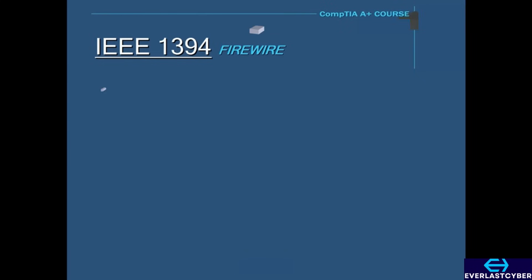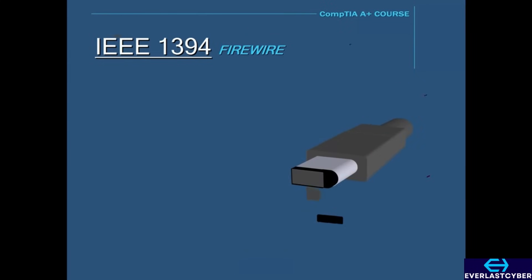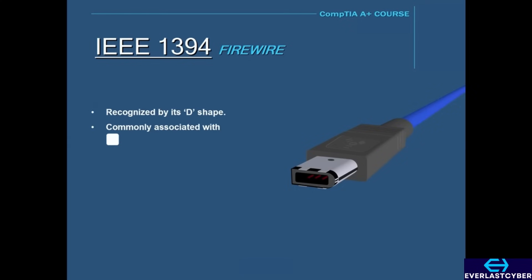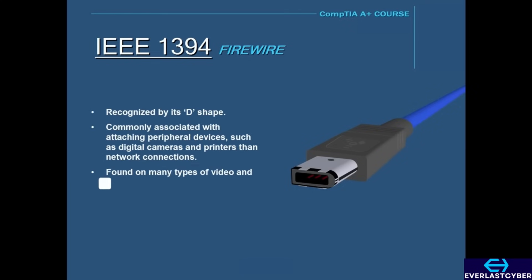This is the IEEE-1394 connector, also known as FireWire. FireWire is recognized by its D shape. This type of connection is becoming more popular on desktops and laptops, and is commonly associated with attaching peripheral devices such as digital cameras and printers, rather than being used as network connections. These are also found in many types of video and multimedia devices.